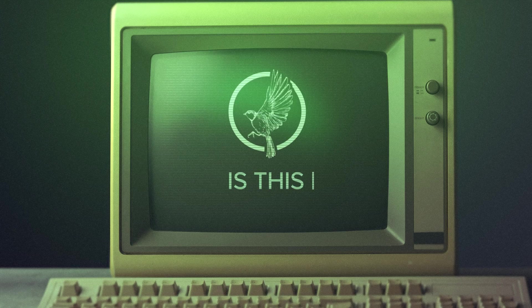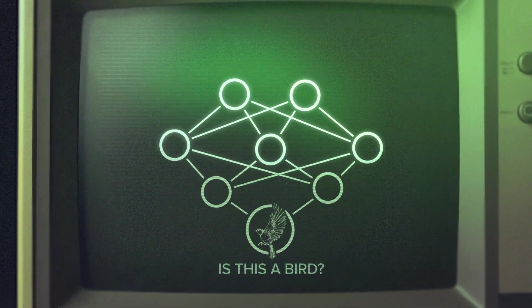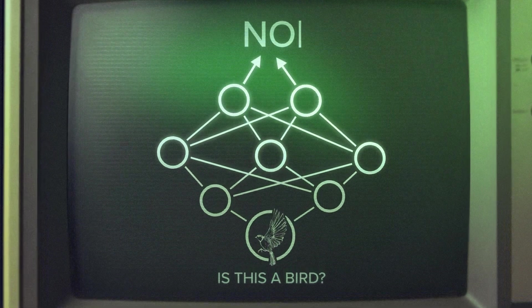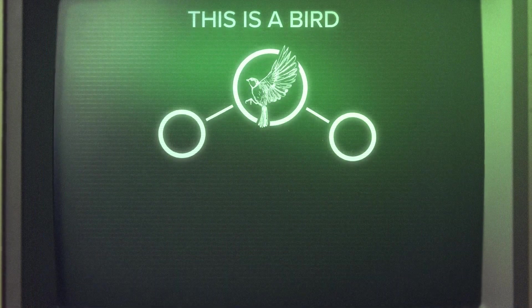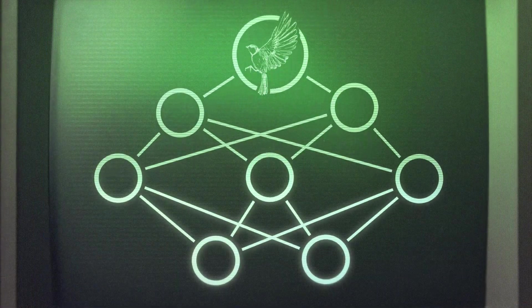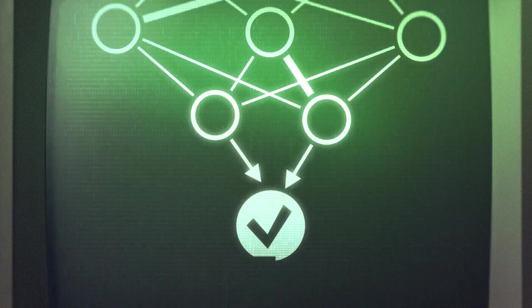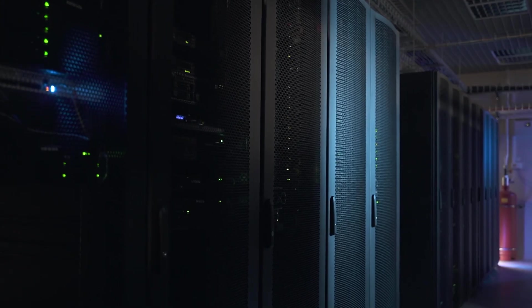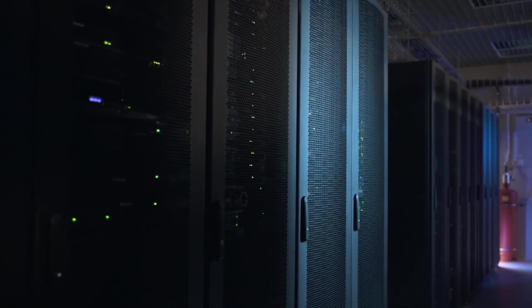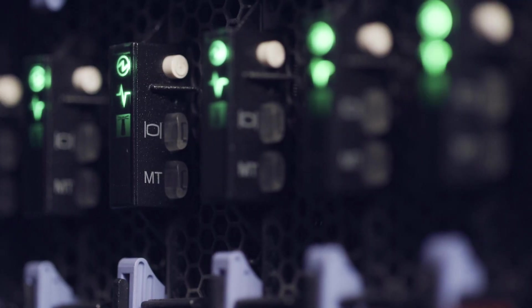Take an example: you have a neural network and you'd like it to say yes if there's a bird in the image and no if there's no bird. What you really want to do is show it an image of a bird and then ask the question, how do I change the strengths of the connections so the feature detectors are better at detecting birds? That's what backpropagation does — it sends information backwards through the network to figure out how to change all the connection strengths to make it better at giving the right answer.